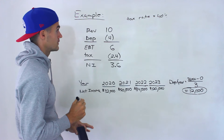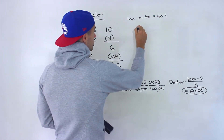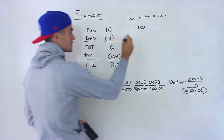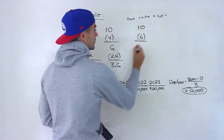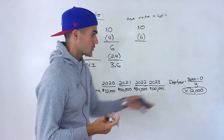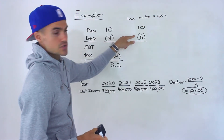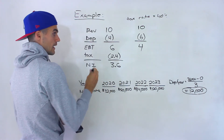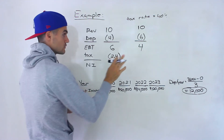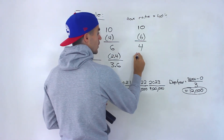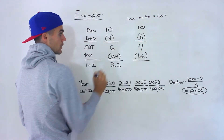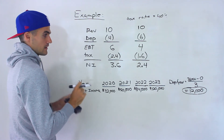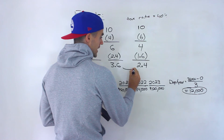Now for the new income statement, the revenue stays the same but the depreciation increases from $4 to $6 — an increase of $2, just like we're increasing depreciation by $12,000 in the main problem. So the earnings before taxes becomes $4. With a 40% tax rate, taxes are 4 × 0.4 = 1.6, giving us a net income of 2.4.